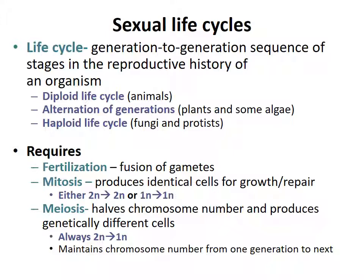There are different sexual life cycles. A life cycle is the generation-to-generation sequence of stages in the reproductive history of an organism. There are three big life cycles: the diploid life cycle, which you're probably familiar with; alternation of generations in plants and some algae; and the haploid life cycle in fungi and some protists. Sexual life cycles require fertilization, which is the fusion of gametes, and mitosis, which produces identical cells for growth and repair. Mitosis can go from diploid to diploid or haploid to haploid, keeping the chromosome number the same.